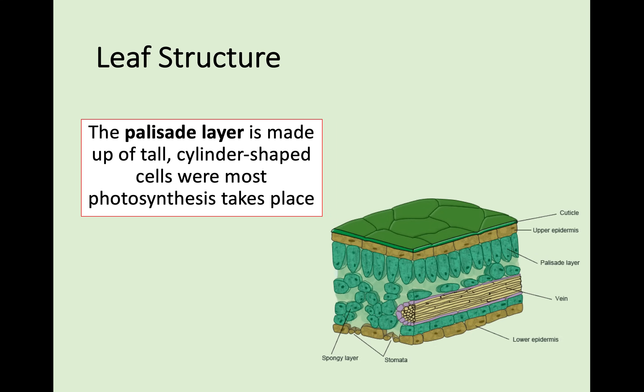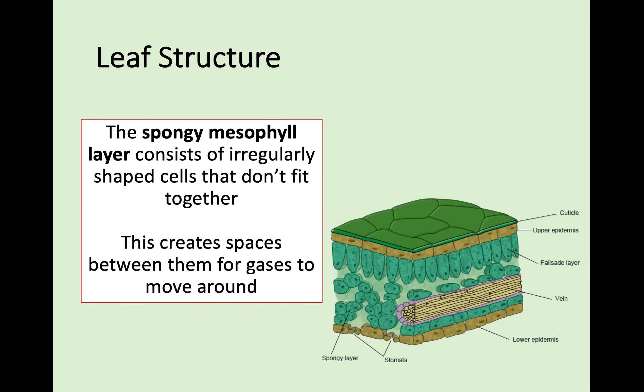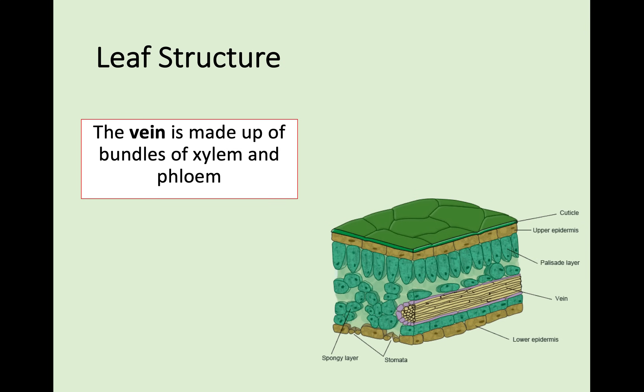Working your way down the leaf, there are oval cells arranged in a fence-like structure called palisade cells - this is where most photosynthesis takes place within a leaf. They're called palisade because a palisade is a fence made up of trees all stacked together. Below that, there are other cells clustered irregularly with lots of gaps between them called spongy mesophyll. The reason they don't fit together is those gaps allow gas - oxygen and carbon dioxide involved in photosynthesis - to move around. Remember the vein is made up of bundles of xylem and phloem.